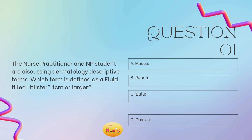I always recommend reading the stem of the question first as it allows you to slow down to ensure you're answering what is being asked of you. The stem of the question states: which term is defined as a fluid-filled blister one centimeter or larger? This is a prime example of how the stem tells you exactly what you need to be addressing and answering. The rest of the question is just fluff — supportive details that the nurse practitioner and NP student are discussing DERM descriptive terms. So which term is defined as a fluid-filled blister? Your best answer is C, a bulla. Bulla is the DERM term for a fluid-filled blister, and it's typically one centimeter or larger.